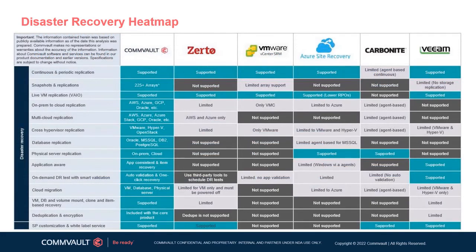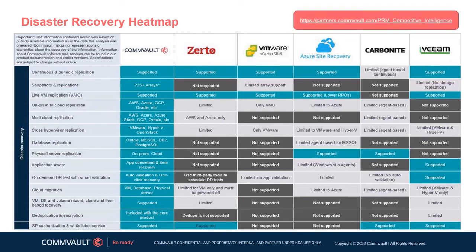Based on publicly available information, Commvault's Disaster Recovery solution offers a significant series of advantages over competitors like Zerto, VMware, Azure, Carbonite, and Veeam. Notably, we are the only vendor that offers cross-hypervisor replication, with an expanded set of database replication options, built-in deduplication and encryption, and a massive list of supported arrays, making the choice particularly clear for organizations.